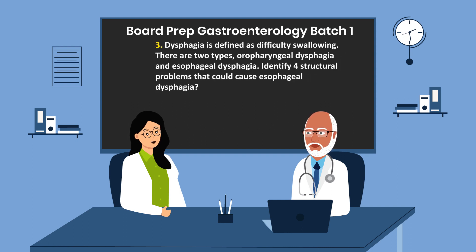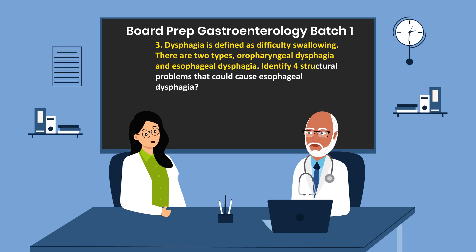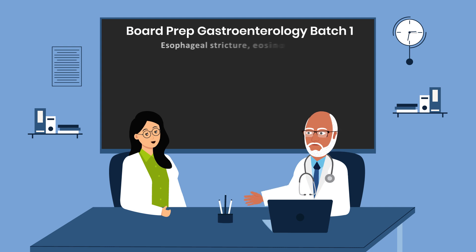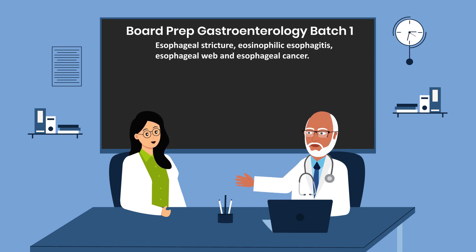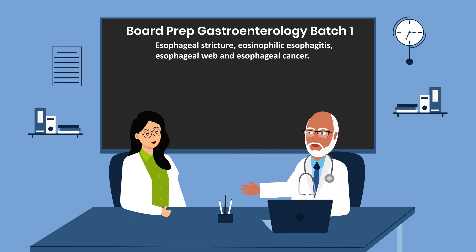Question 3. Identify four structural problems that could cause esophageal dysphagia. The answer is esophageal stricture, eosinophilic esophagitis, esophageal web, and esophageal cancer.